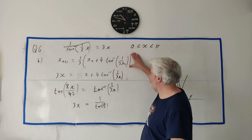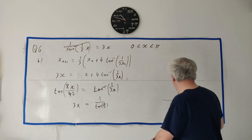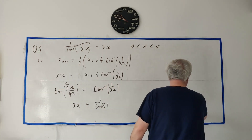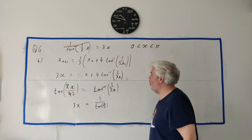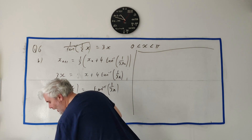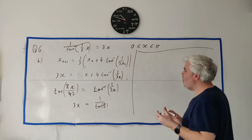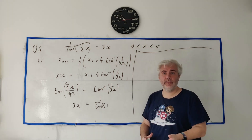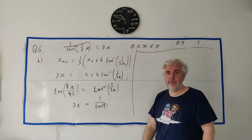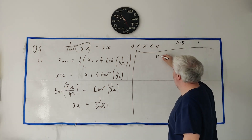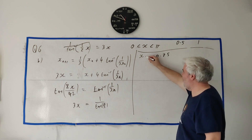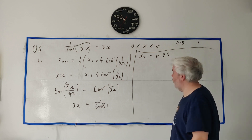Now in part C, they want us to use this formula to find alpha — the root, the value of x — to two decimal places. To use the iterative formula, I'll do it the slow way twice and then take a shortcut with the calculator. The slow way is we make a guess. Since we know the answer is between 0.5 and 1, I would personally guess x₀ = 0.75.